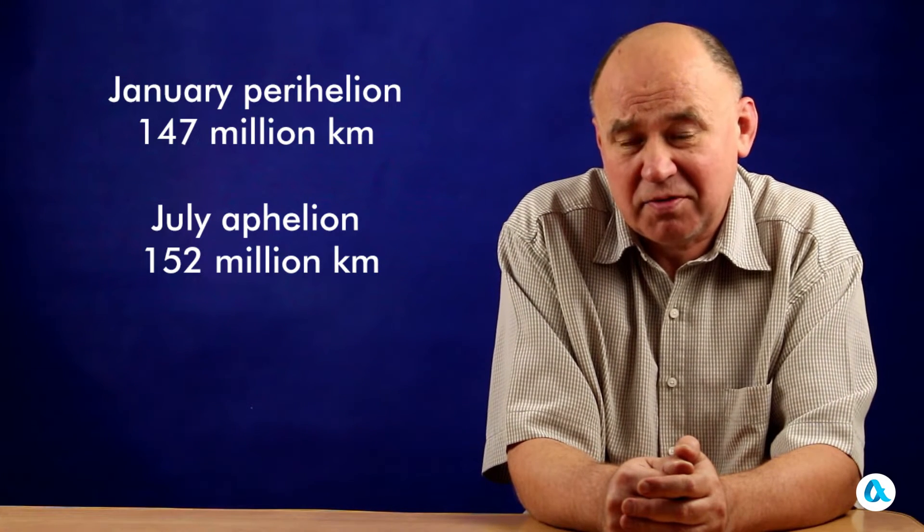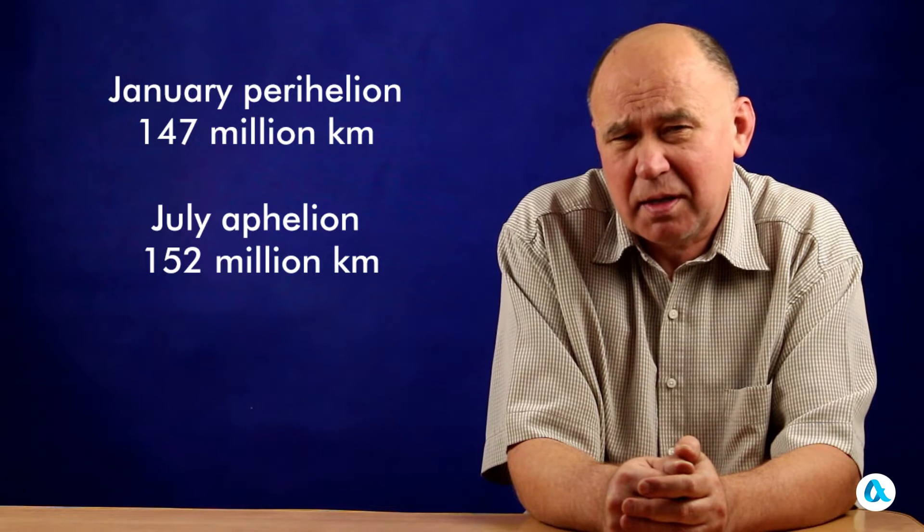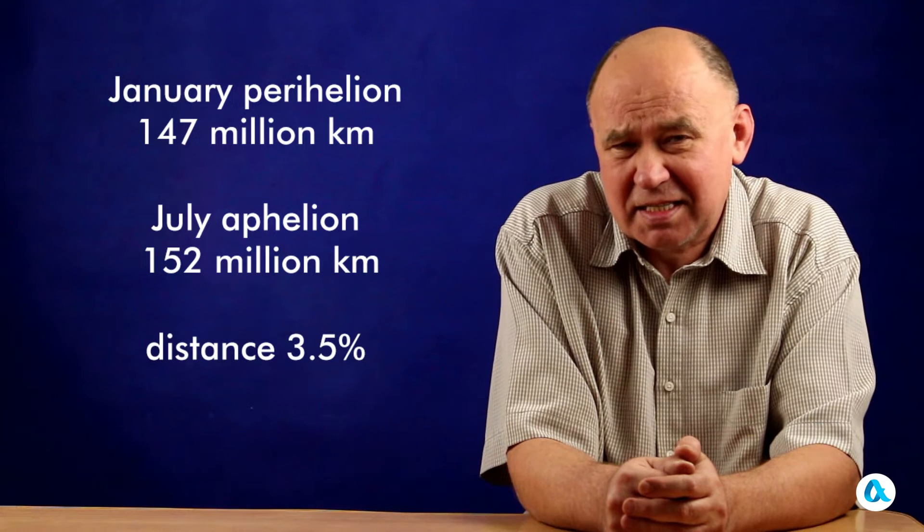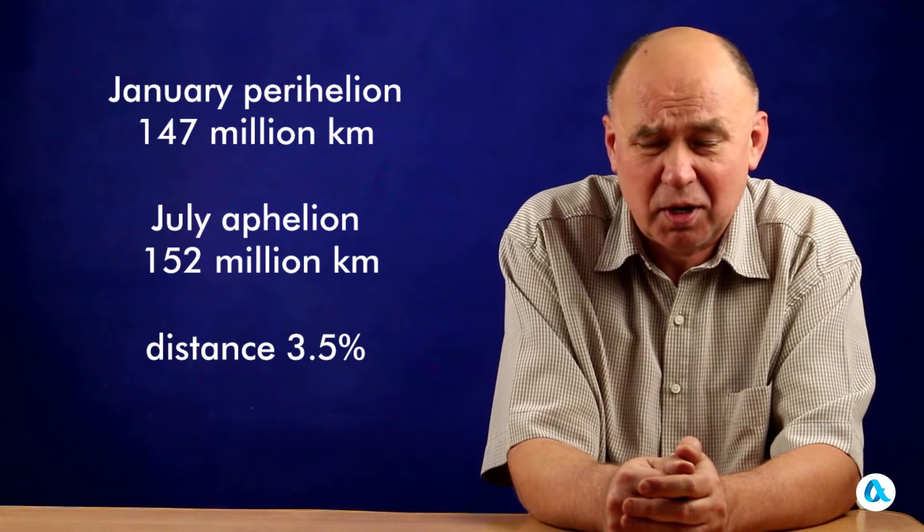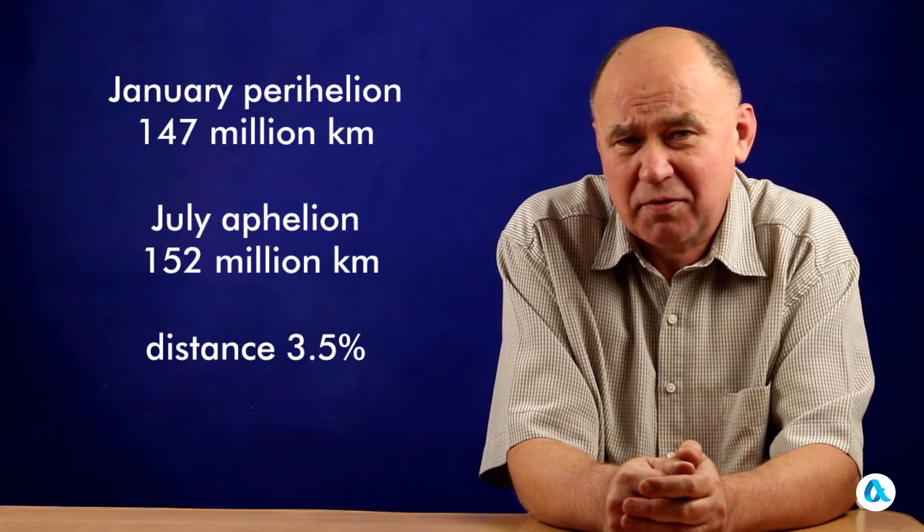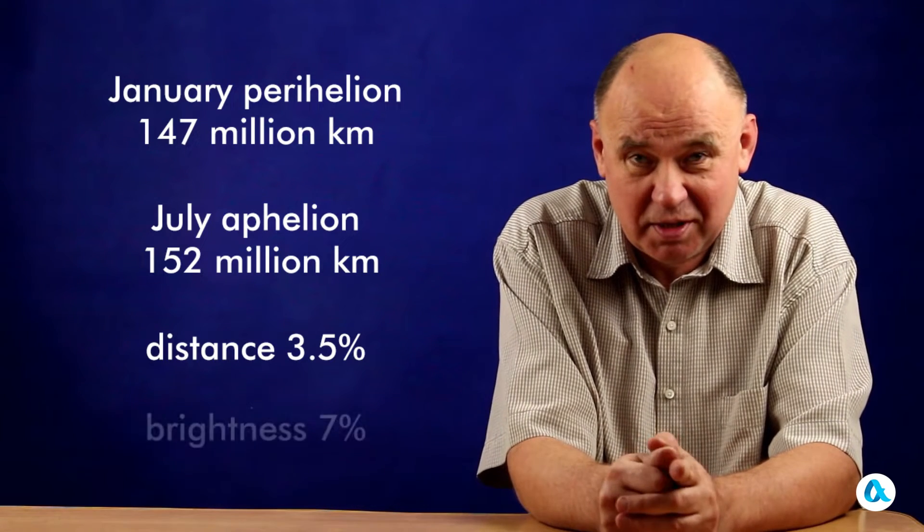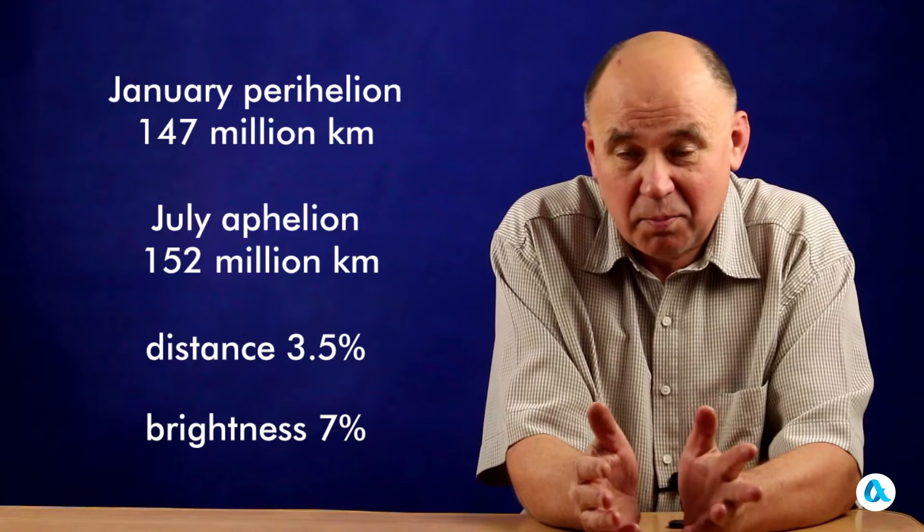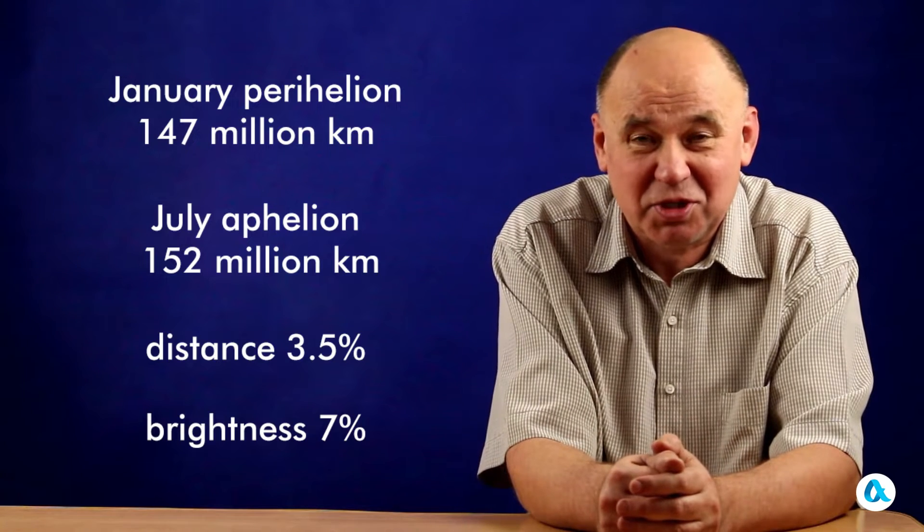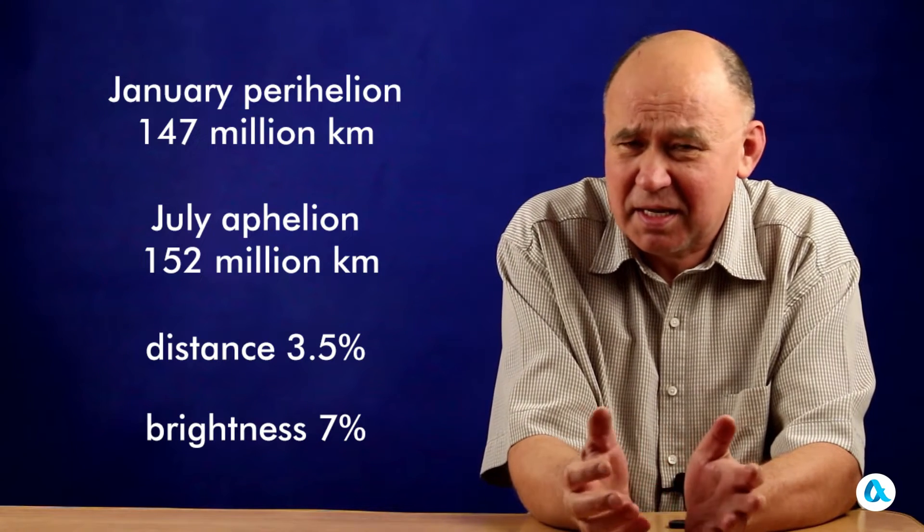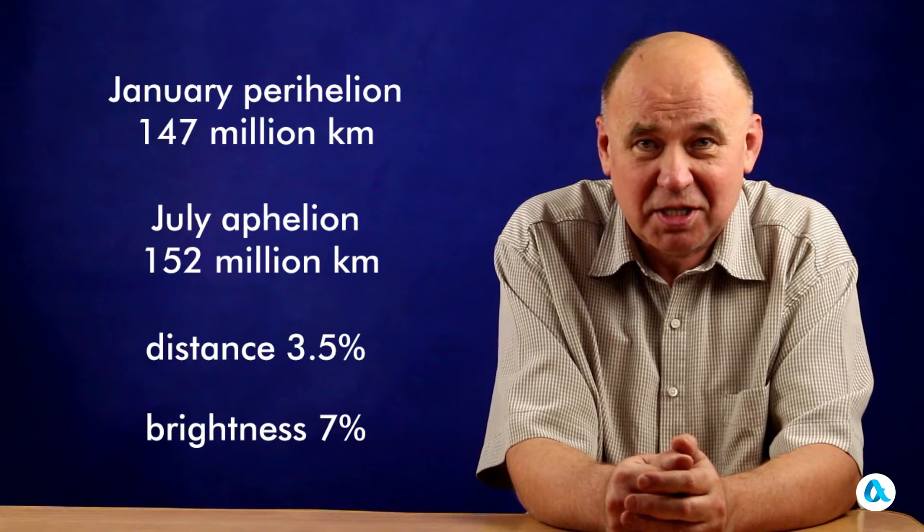It's clear that these distances differ not too much, only by 3.5%. Therefore, the brightness of the Sun during January is 7% higher compared to July, which is a significant difference. The Sun is at its brightest during the winter season.